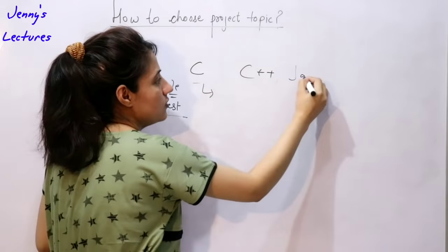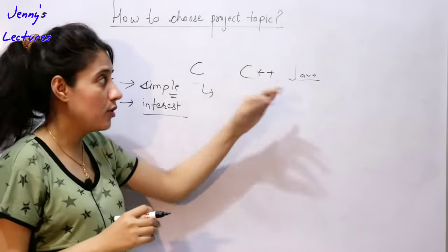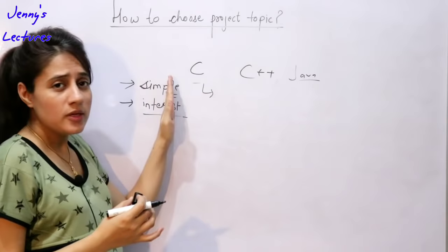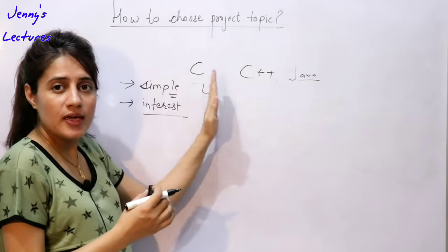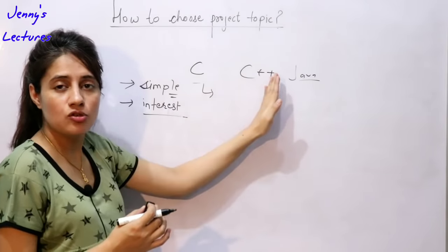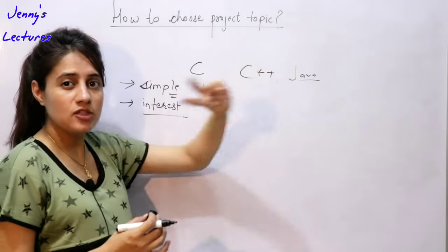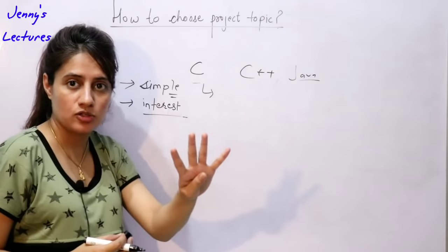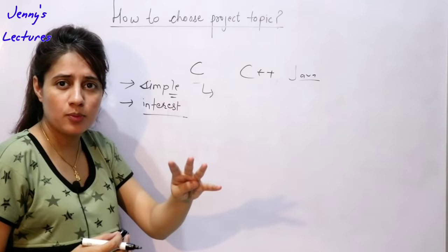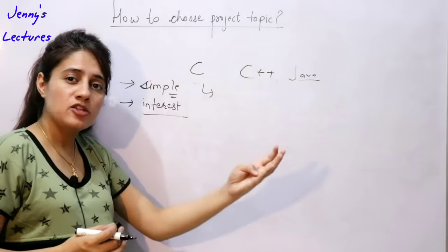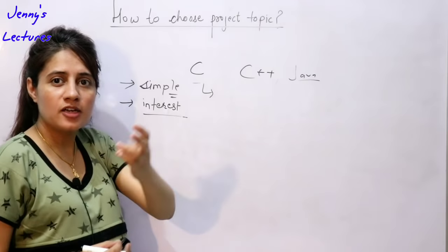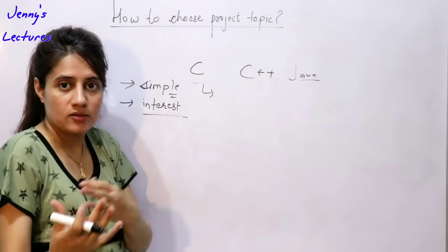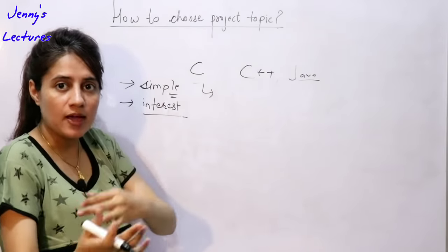Then obviously you will learn Java, so start making a project in Java. The first project would be simple, then you can increase the level of difficulty. By first and second year, try to make four different types of projects — not all the same kind like management projects. Try to explore different ideas: an Android app, a game, and a website.